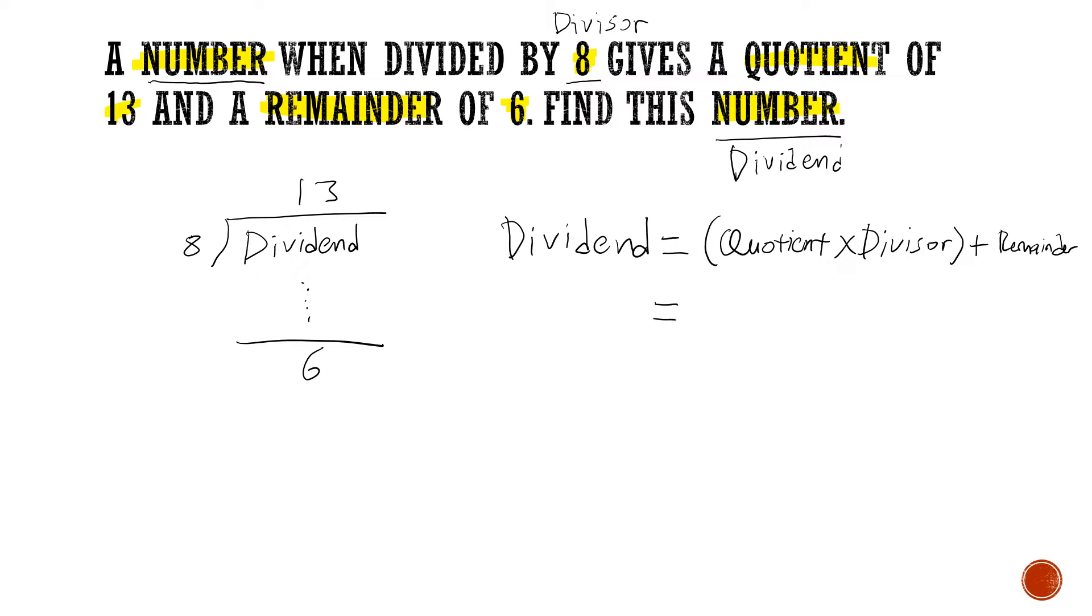So the dividend is the unknown. The quotient is 13, divisor is 8 and the remainder is 6. So you should be able to get the answer. You have to work out what's in the brackets first and then you add 6. The answer you should get is 110. You have to really work out what is 13 times 8 plus 6. But once you work it out, you'll find that the answer is 110.